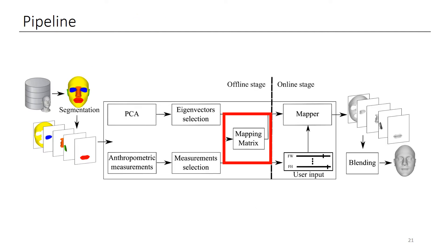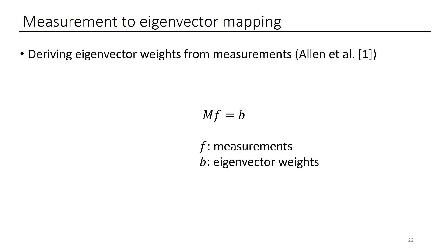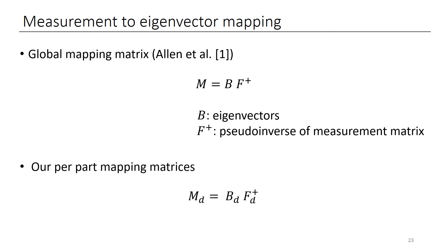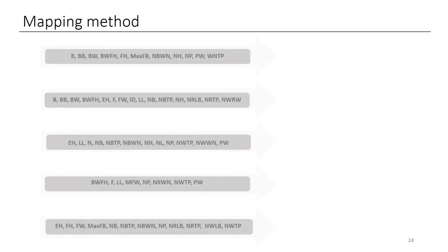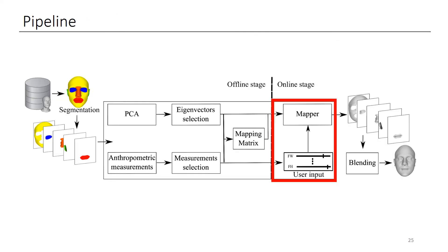The last step of the offline stage is to encode the relationship between the eigenvectors and measurements in a mapping matrix. As in the paper of Alan and colleagues, we use a linear mapping matrix to compute the eigenvector weight from the measurements, and we learn these linear mapping matrices from the measurements of the dataset. As opposed to their method, we compute one such mapping matrix for each part. The output from the offline stage is used in the online stage where the mapper collects user-prescribed anthropometric measurement values and applies the mapping matrices to reconstruct each part.